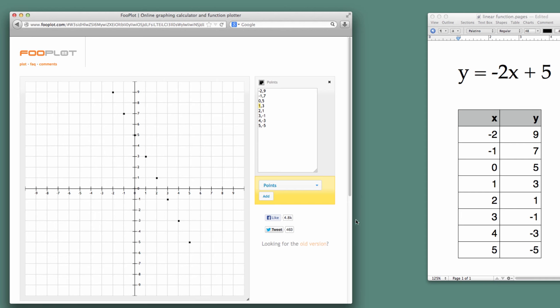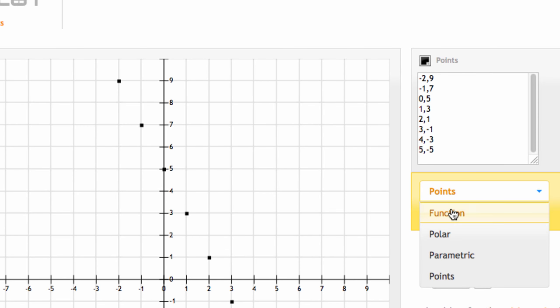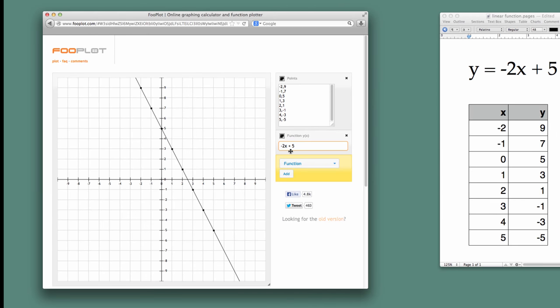But what happens if we can also use this equation grapher to put the exact line on there. So what we're going to do is we'll shorten this up here a little bit and change this points to a function. We're going to add it. And I'm going to change the default function. They give us x squared to show us what that looks like. But I'm going to put in minus 2x and I'll put in a space plus 5. And I'll hit return. And you can see that it goes right through all of the points that we plotted.